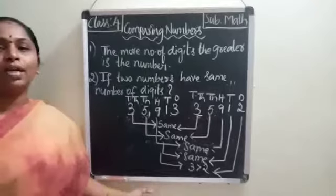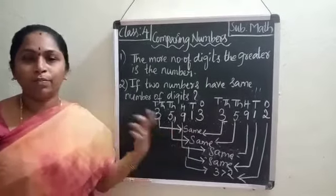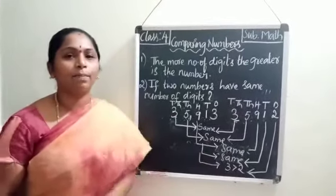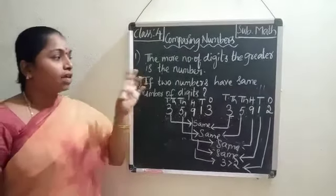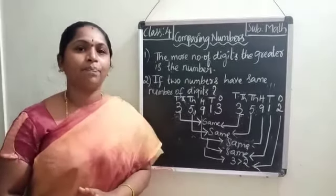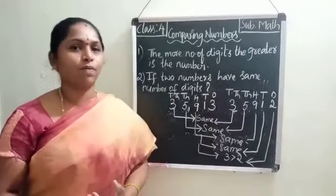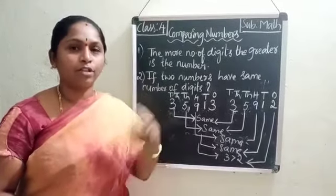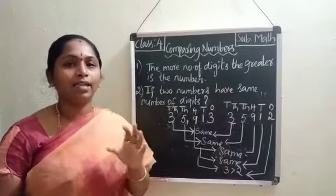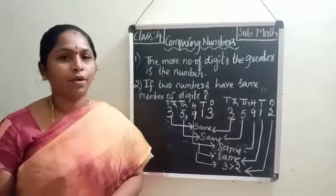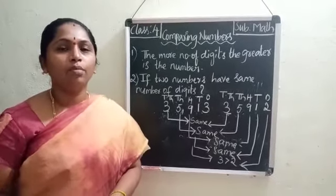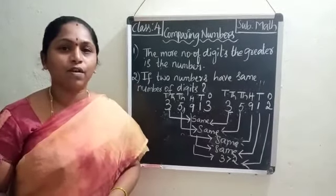This is the way we compare when there are five-digit numbers and both numbers have the same number of digits. To summarize: the comparison of numbers first depends on the number of digits. If the number of digits are the same, then we go for the highest place value — ten-thousands or thousands — whichever position has the greater digit, that number is the greater number. I hope you understood the concept. If you go through more examples, you will understand it even more. Thank you very much.